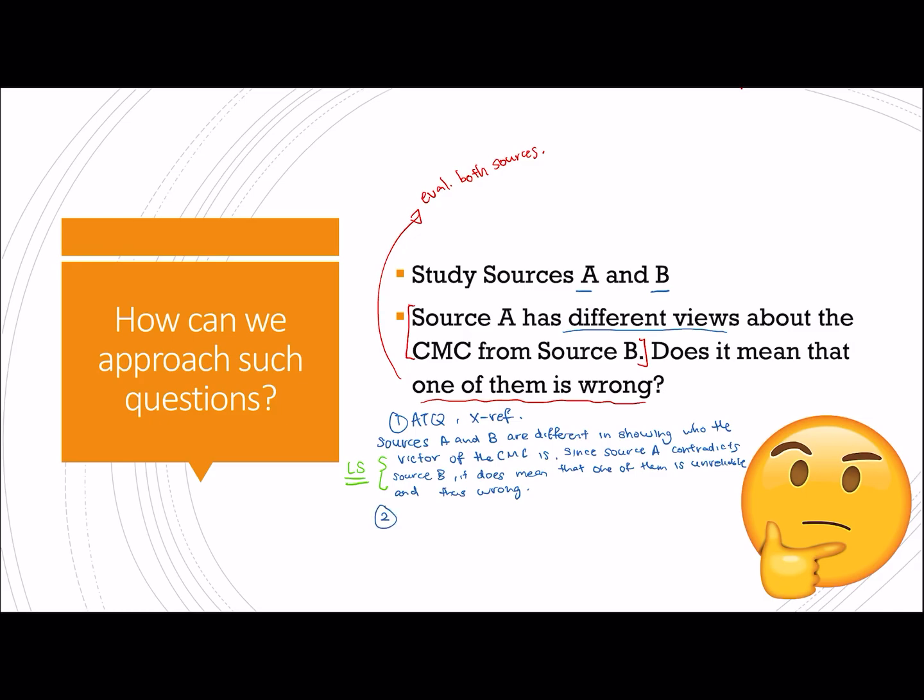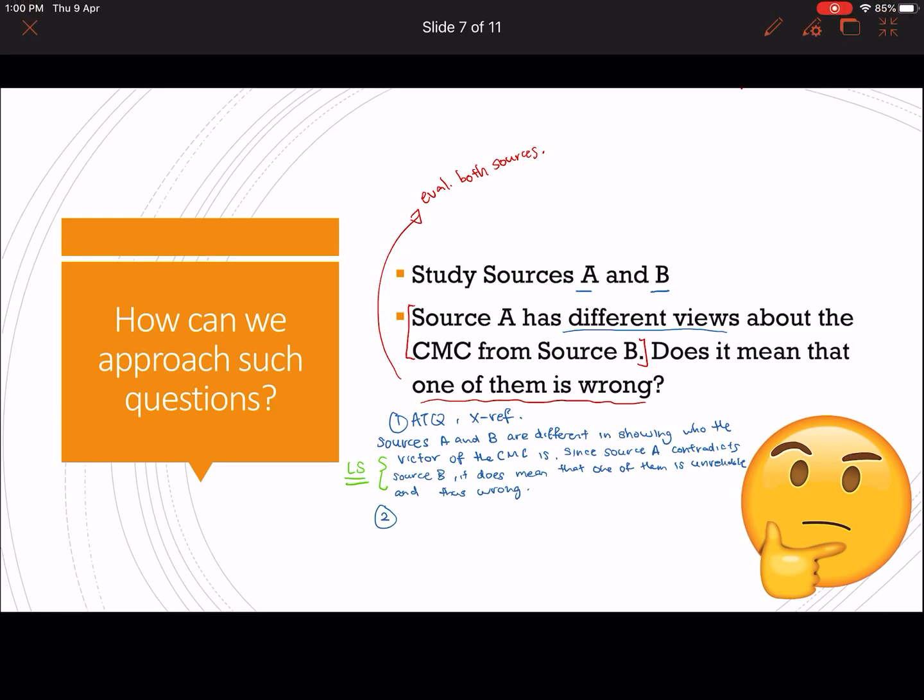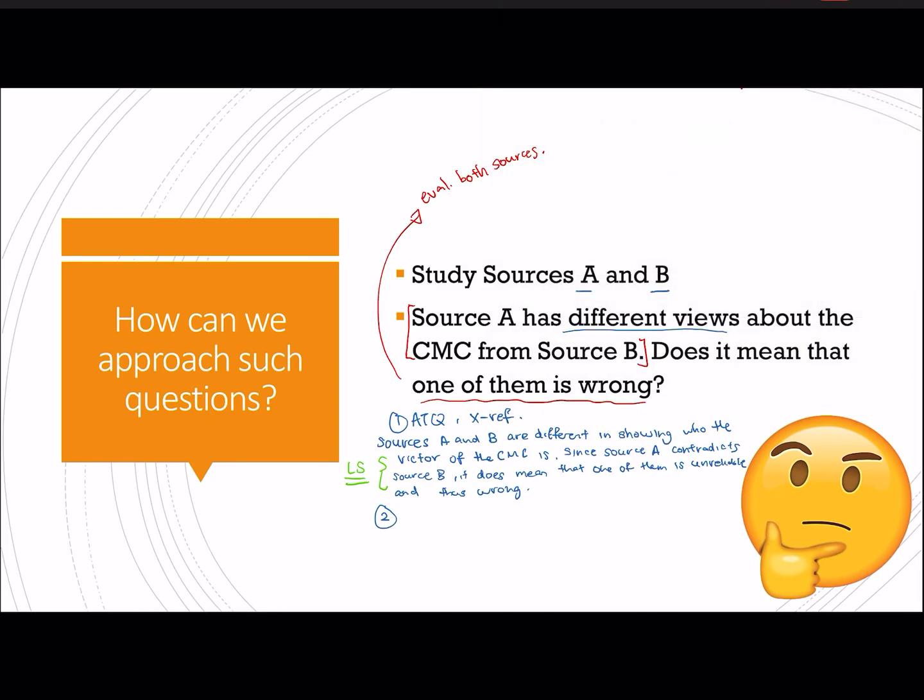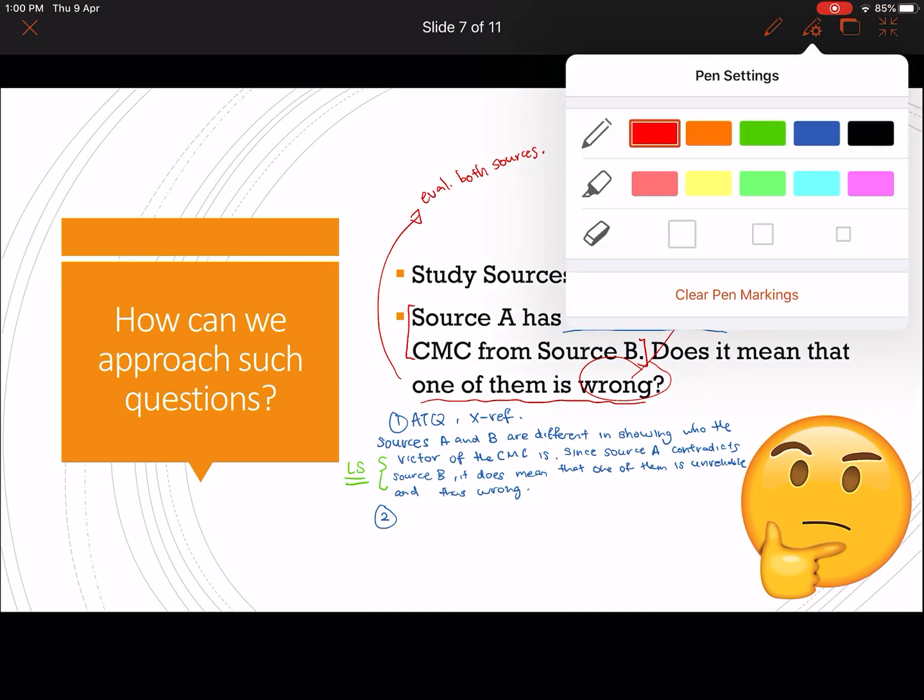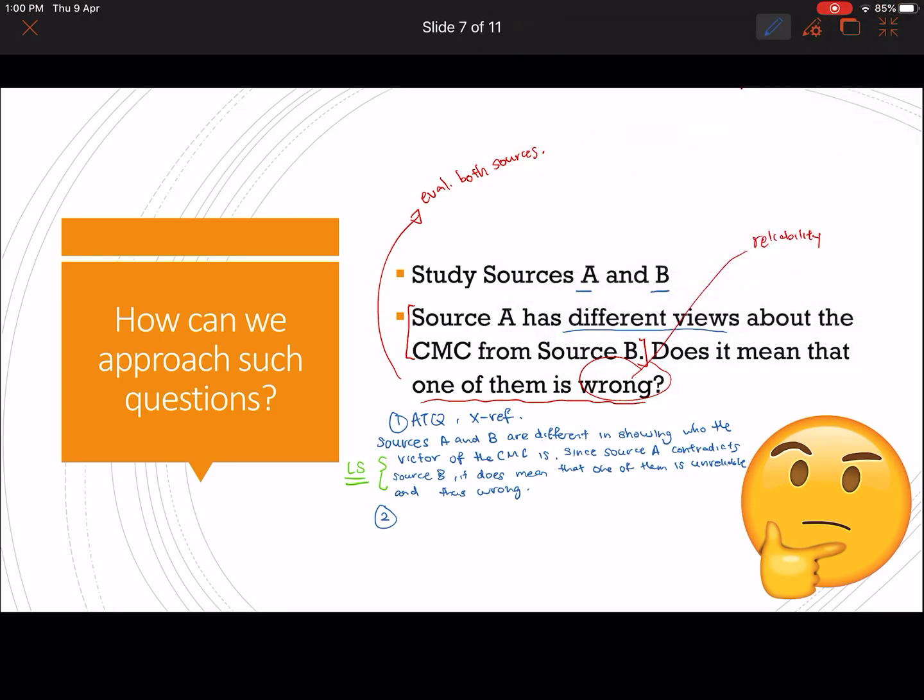Remember I said that you will need to evaluate both sources, and when we are checking whether a source is wrong, we are checking the reliability of the source. So what we need to do now then is therefore to evaluate the reliability of both sources.